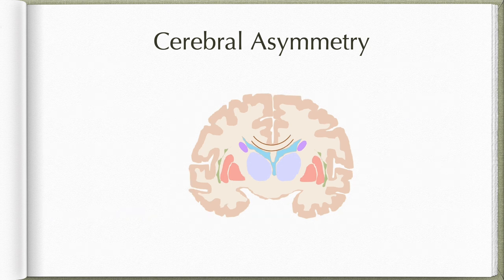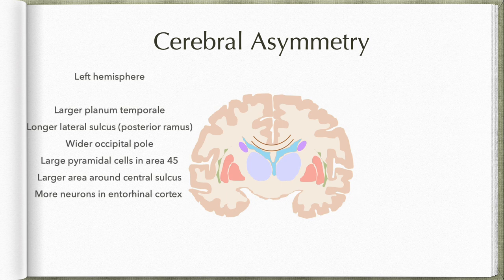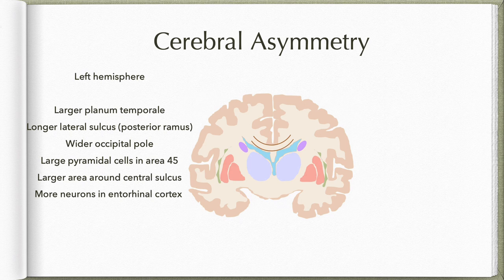Apart from this functional asymmetry, there are also anatomical variations between left and right sides, both macro and microscopic. The left hemisphere has a larger planum temporale — this is the gyrus present on the posterior aspect of the superior surface of the superior temporal gyrus, just behind the primary auditory area. Because that planum temporale is larger, the left hemisphere also has a longer lateral sulcus — that is, the posterior ramus of the lateral sulcus — and it is also more horizontally oriented compared to the right side.